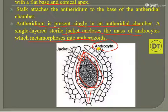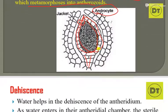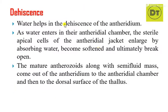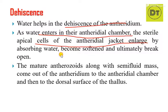The androcytes form antherozoids, which are the sperms. Water helps in the dehiscence of the antheridium. When water enters into the antheridial chamber, the sterile apical cells of the antheridial jacket enlarge by absorbing water, become softened, and ultimately break open. As a result, a semi-fluid mass containing the antherozoids comes out to the dorsal surface of the thallus, and the sperms are liberated.